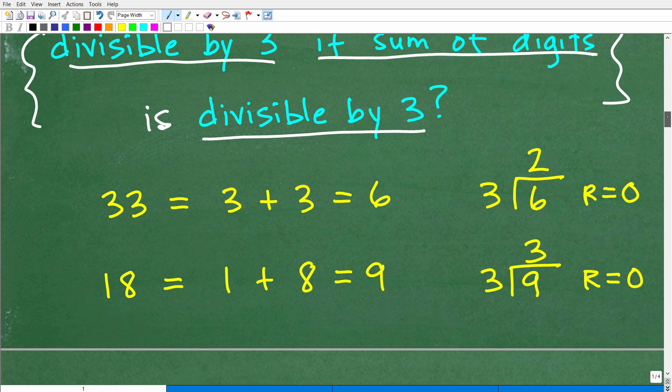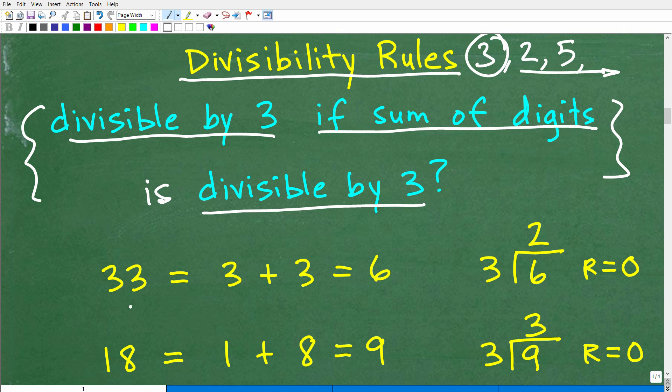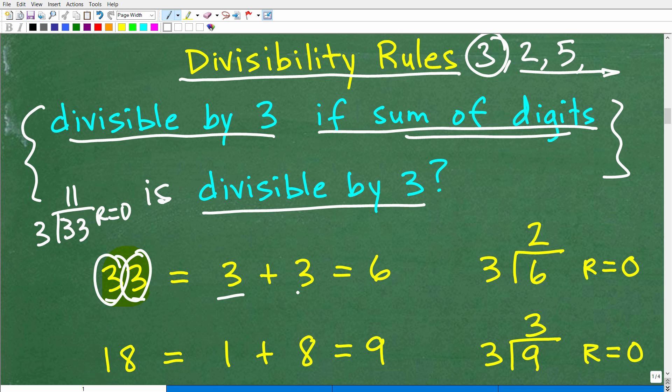Let's take a look at the divisibility rule for 3. We have a rule to test for divisibility for 3. And here it is: a number is divisible by 3 if the sum of the digits is divisible by 3. Again, a number is divisible by 3 if the sum of the digits is divisible by 3. Let's see this rule in action.